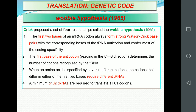Based on this, a minimum of 32 tRNAs are required to translate all 61 sense codons. More than 32 is not a problem, but minimum 32 must be present to recognize or translate all 61 codons. That is the wobble hypothesis.